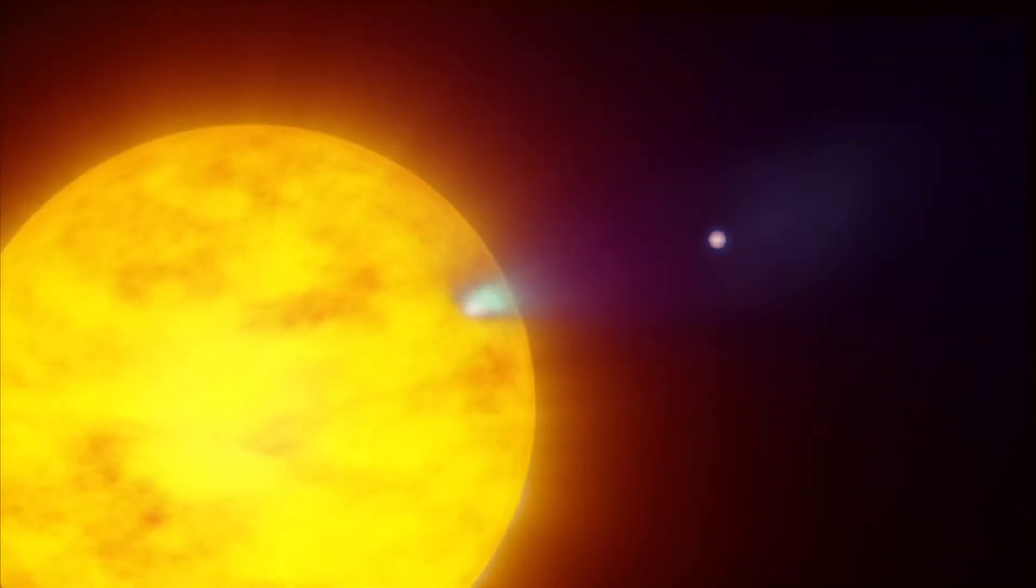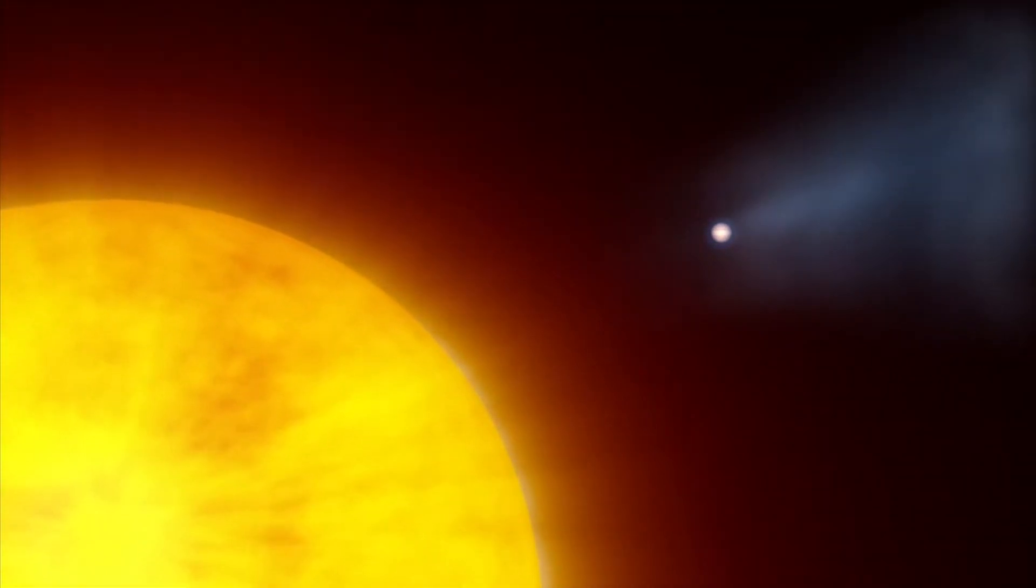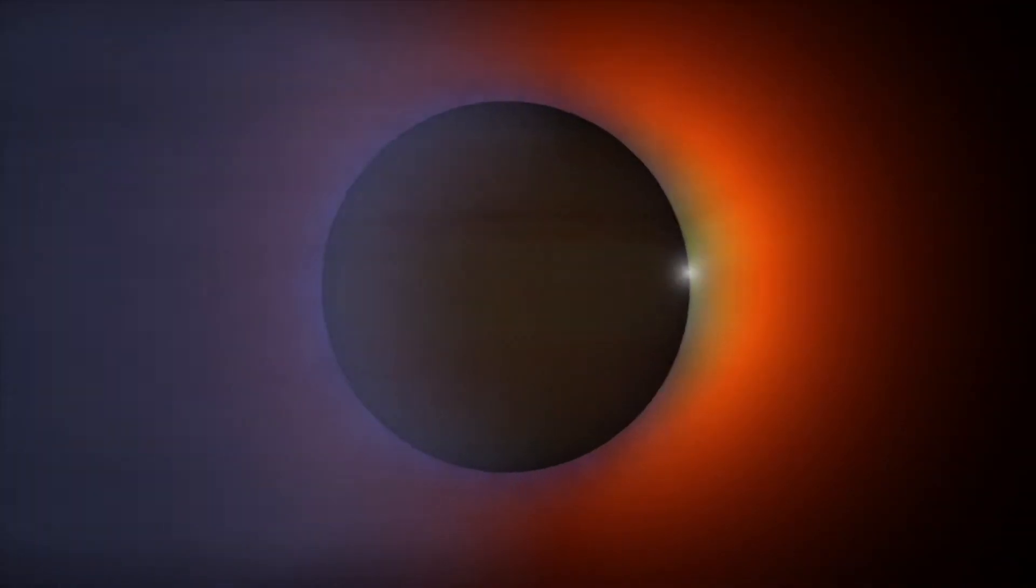While HD 189733 b has plenty of gas to spare, atmospheric erosion is an important process, one able to whittle down any gas giant planet that hugs its star too close.